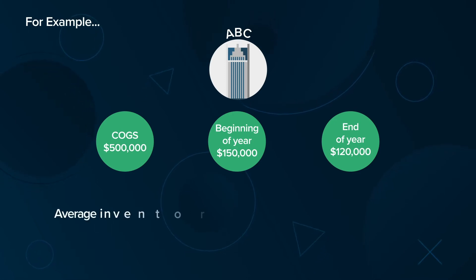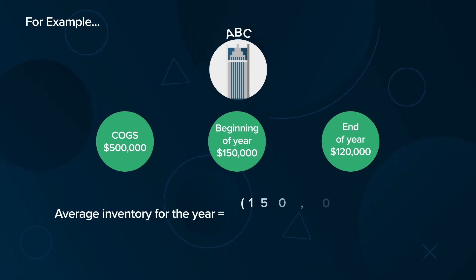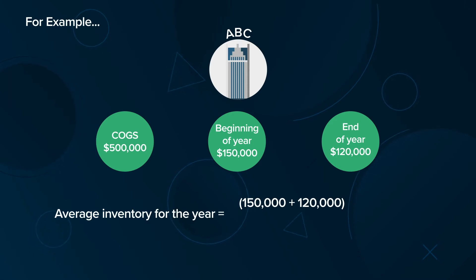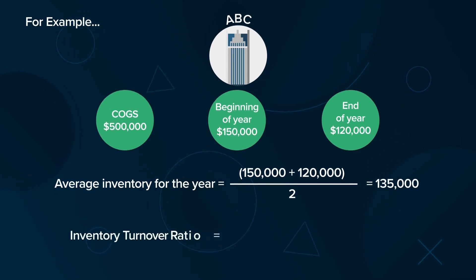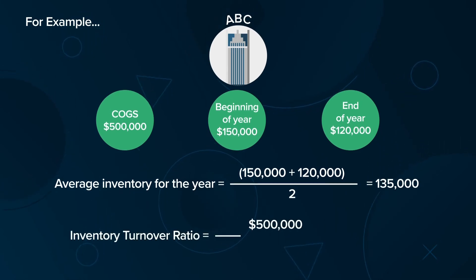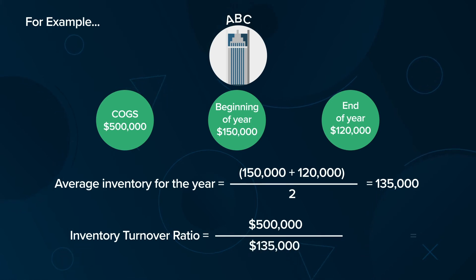Therefore, its average inventory for the year equals ($150,000 + $120,000) divided by 2, which equals $135,000. ABC's inventory turnover ratio equals $500,000 divided by $135,000, which equals 3.7.